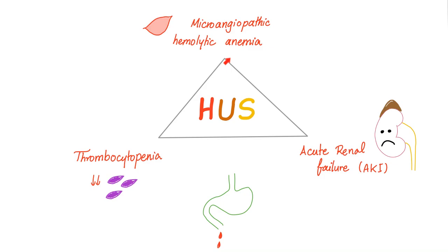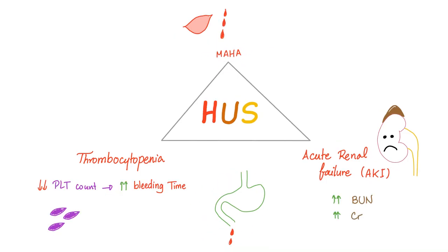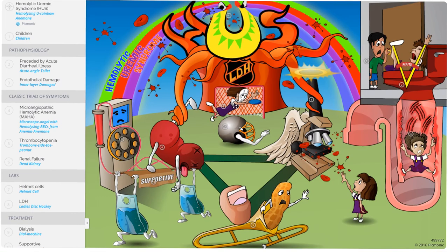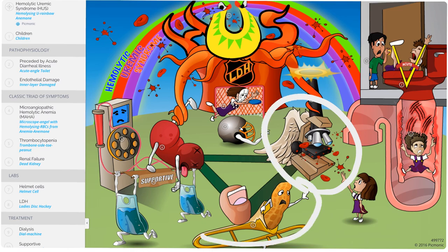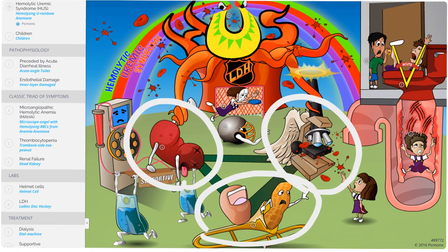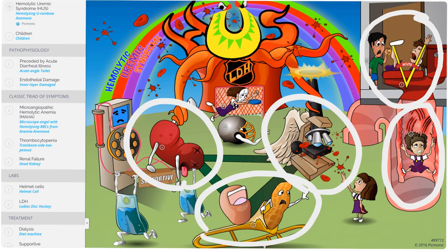In a nutshell, hemolytic uremic syndrome is a triad — a triangle: microangiopathic hemolytic anemia, thrombocytopenia, and acute renal failure. Don't forget the bloody diarrhea. Microangiopathic hemolytic anemia means low hemoglobin, low hematocrit, low RBC count, normal MCV, and high LDH. Thrombocytopenia equals low platelet count and prolonged bleeding time. Acute renal failure equals high BUN and creatinine, and maybe oliguria. Sometimes there is hypertension. Hemolytic uremic syndrome: "hemolytic" is the hemolysis, "uremic" is the uremic syndrome — the triangle of MAHA, thrombocytopenia, and renal failure. Caused by E. coli with bloody diarrhea, endothelial damage visible in the intestine.